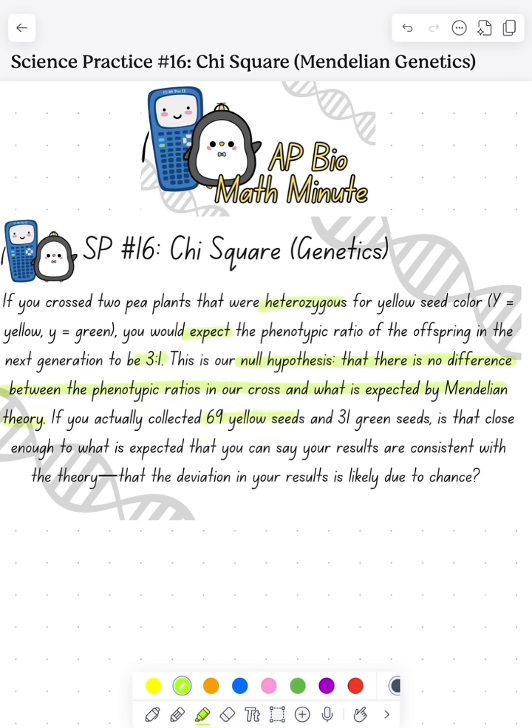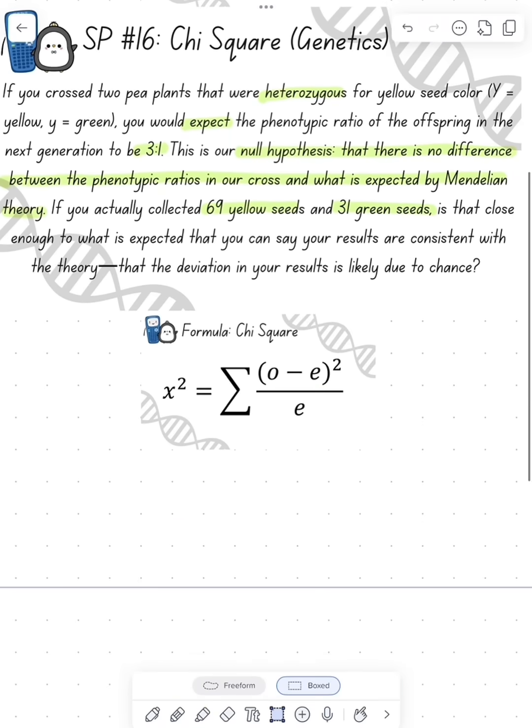We want to see if our null hypothesis - that there is no difference between the phenotypic ratios in our cross and what is expected from Mendelian theory - holds. When we did the cross, we observed 69 yellow and 31 green seeds.